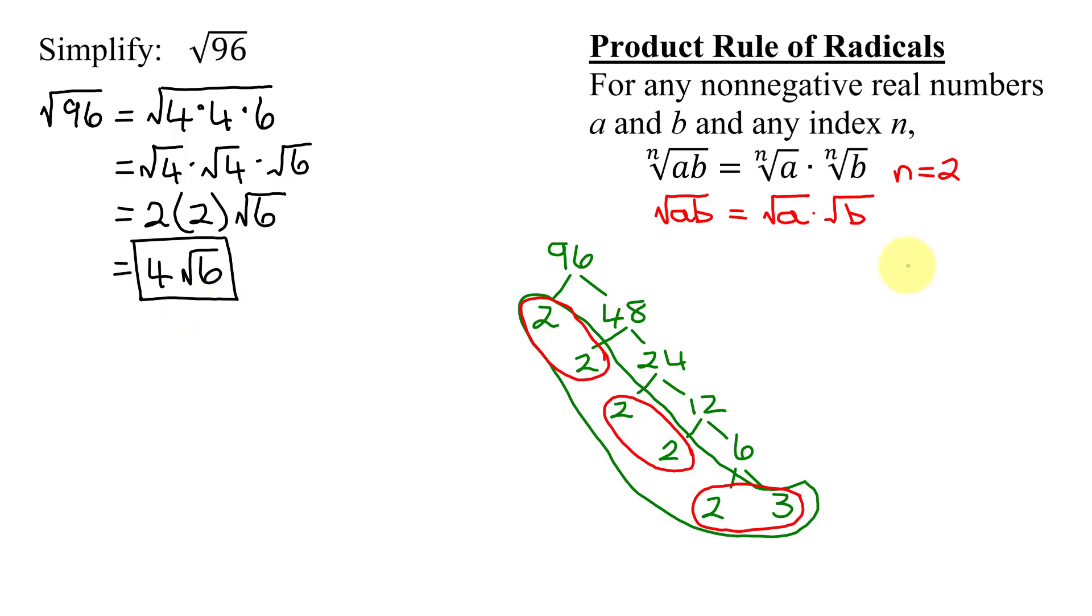Another way to factor 96 is to realize it's divisible by 3. 3 divides into 96 32 times. 32 is even. It divides by 2. 2 divides into 32 16 times. But I'm not going to continue factoring. 16 is a perfect square.